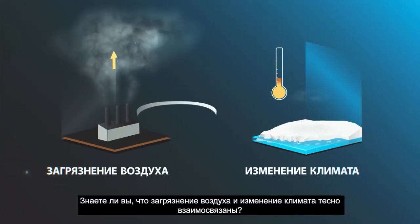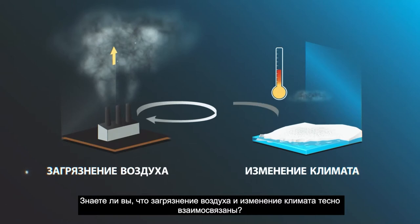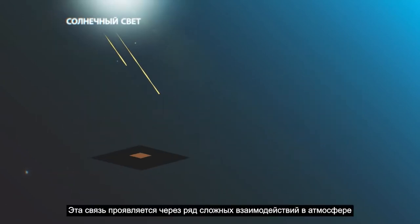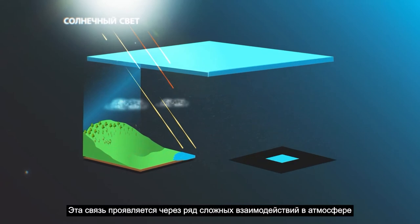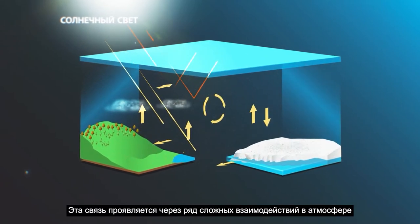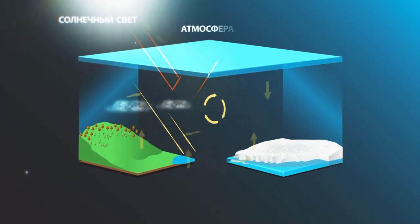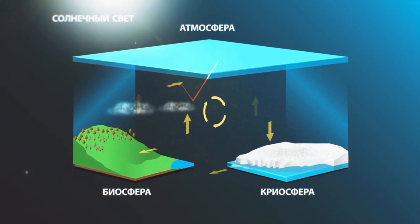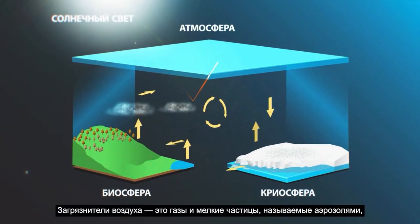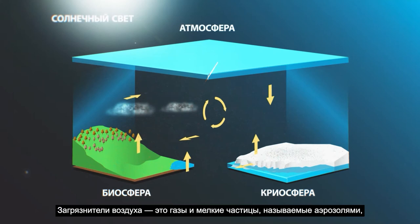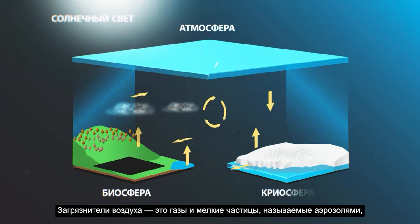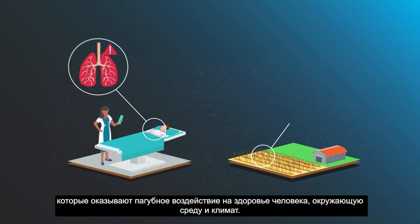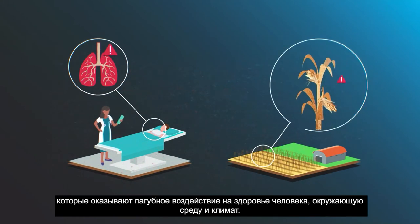Did you know that air pollution and climate change are closely interlinked? This link reveals itself through a series of complex interactions within the atmosphere and between the atmosphere, the biosphere and the cryosphere. Air pollutants are gases and small particles called aerosols that have detrimental impacts on human health, the environment and the climate.